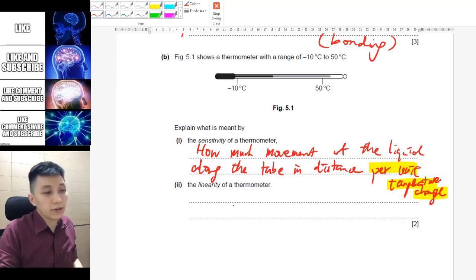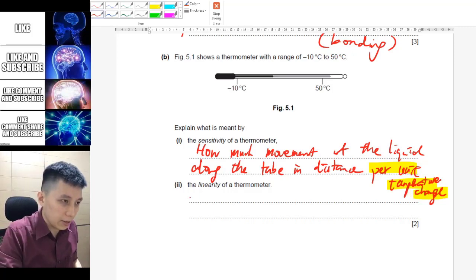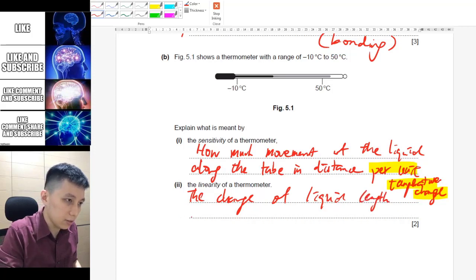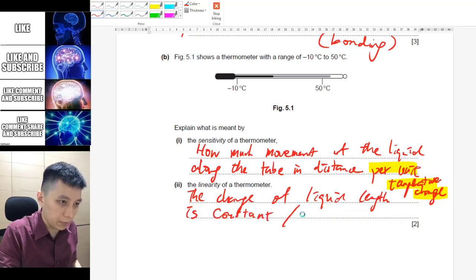The next one is about linearity, and that is about the change of liquid length, or distance, is constant or it may say equal for all temperature degrees.